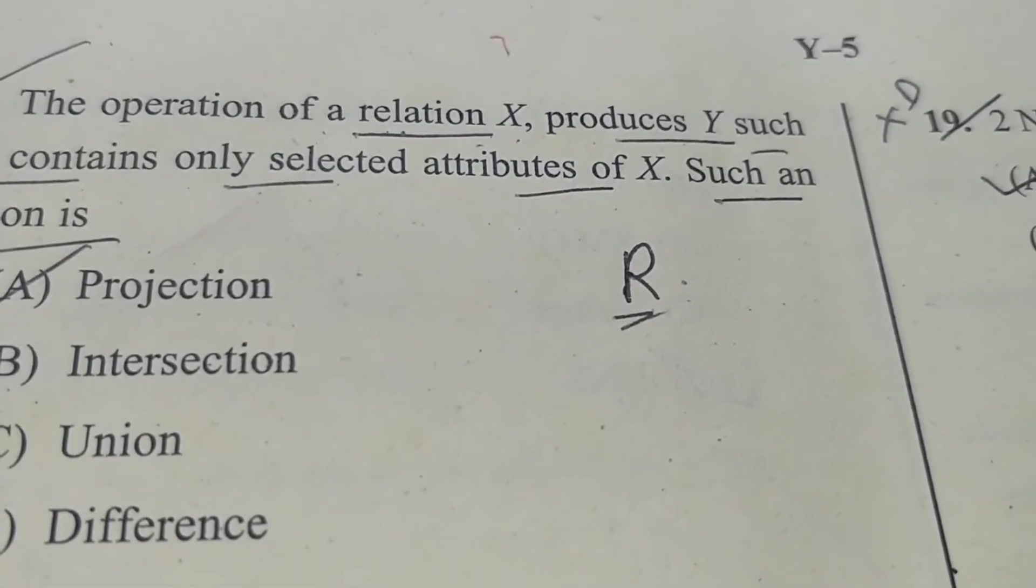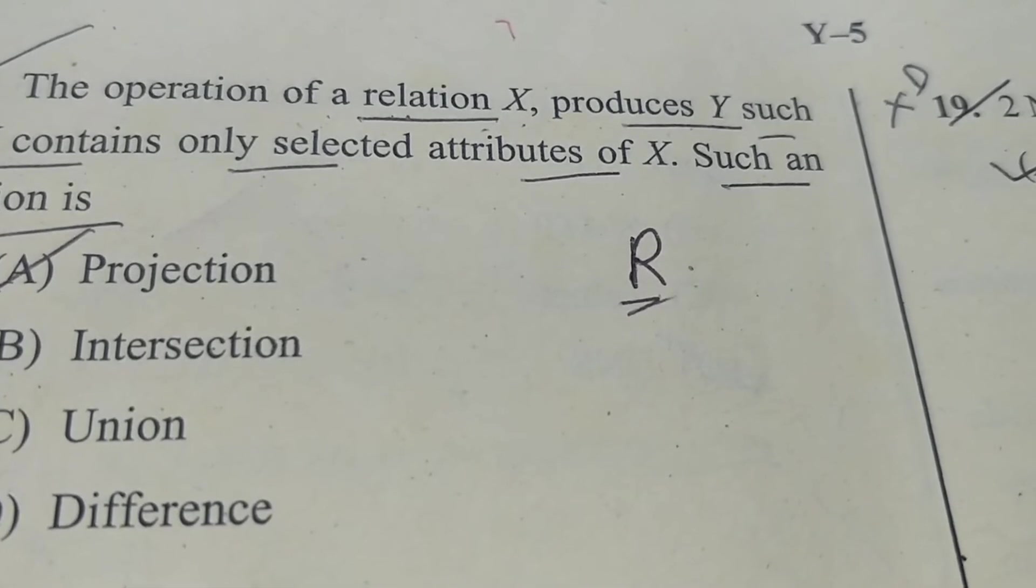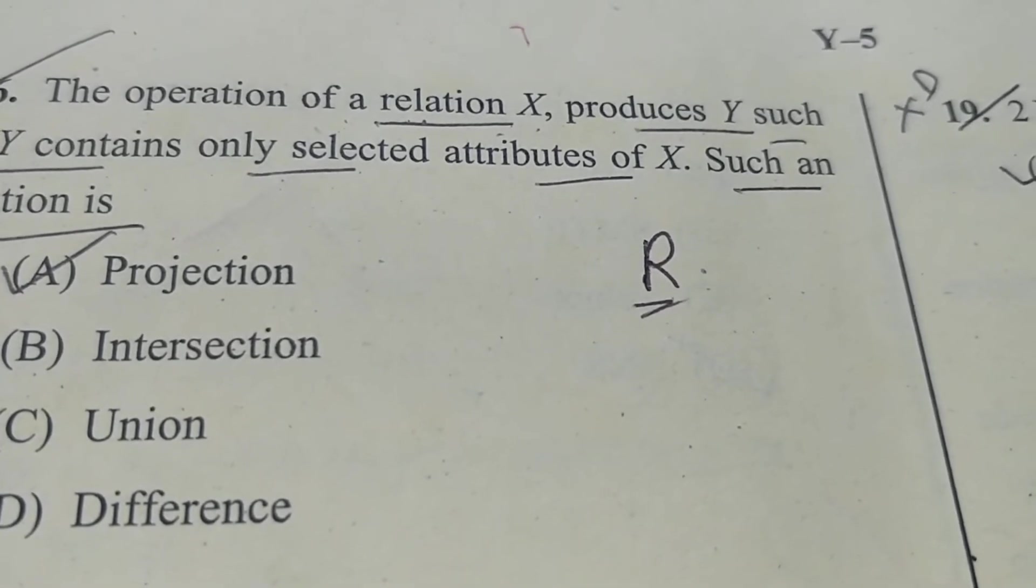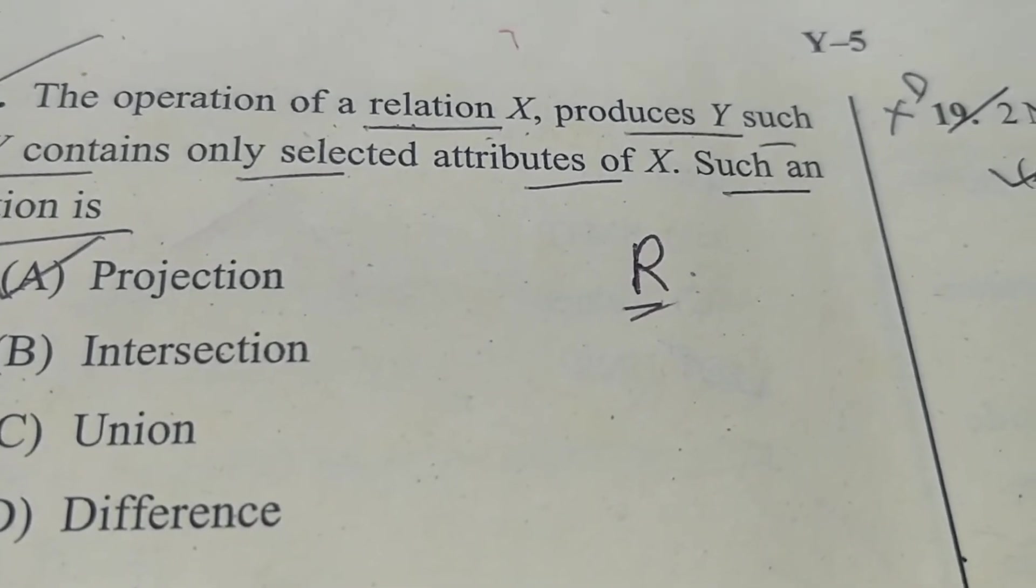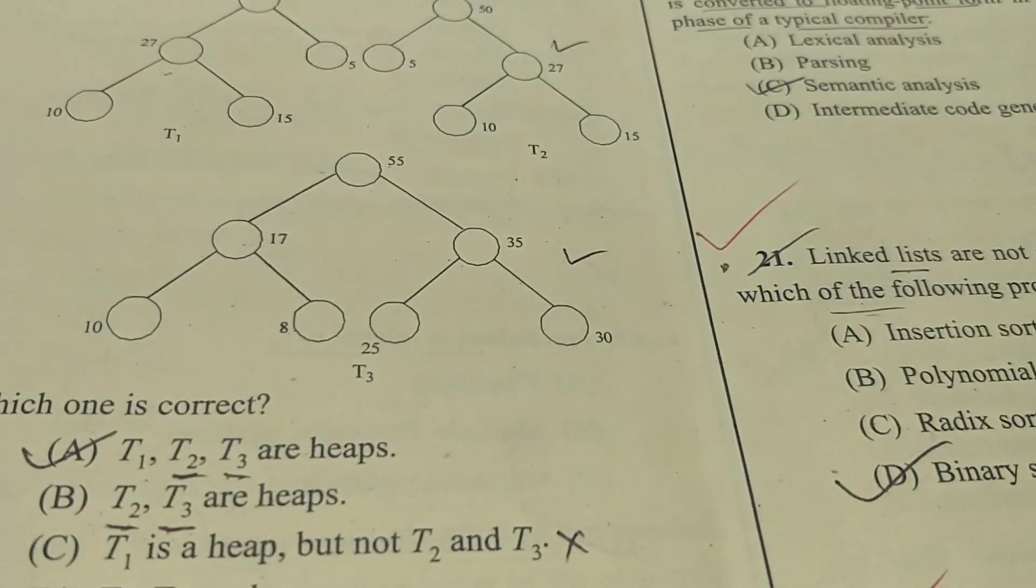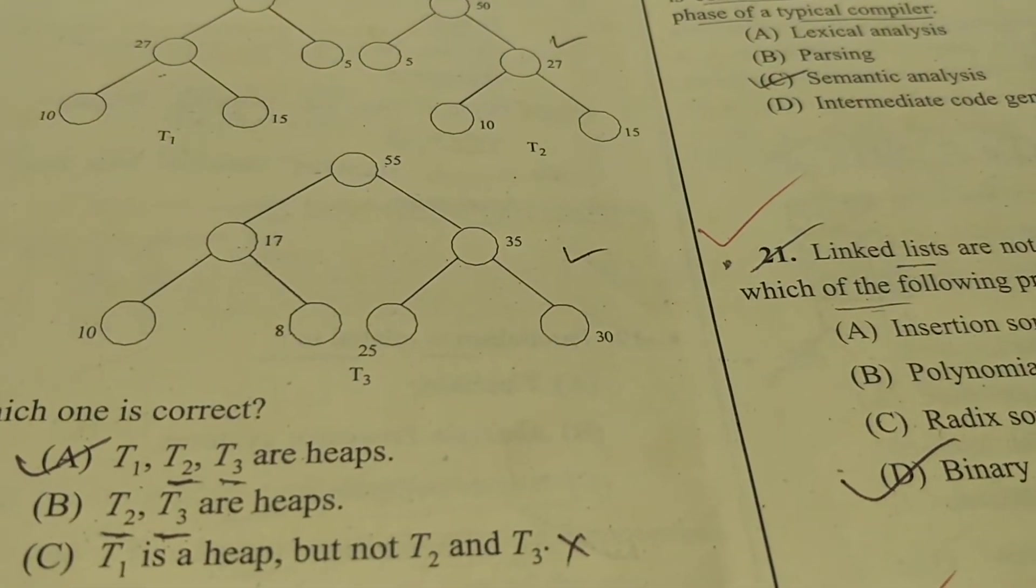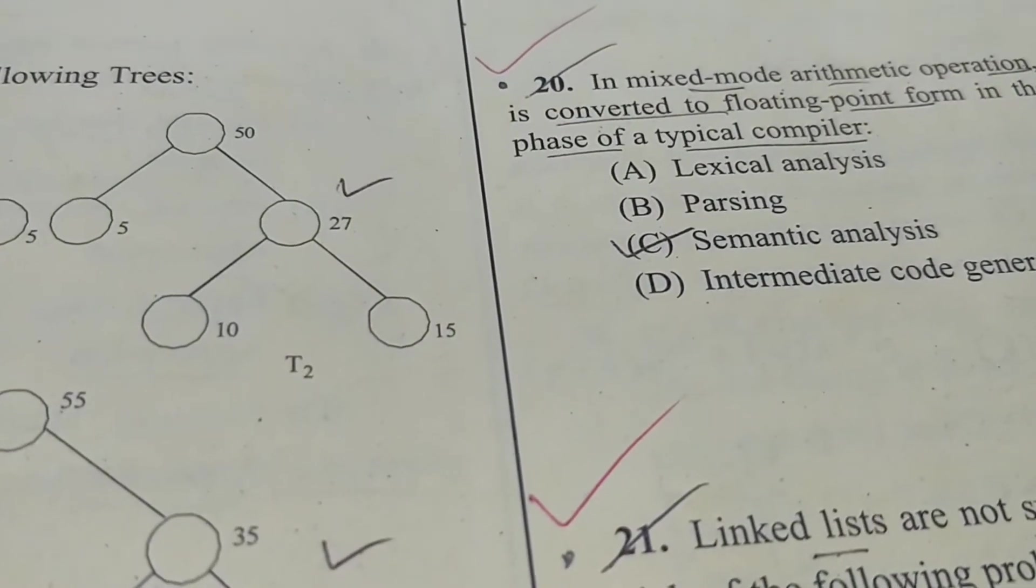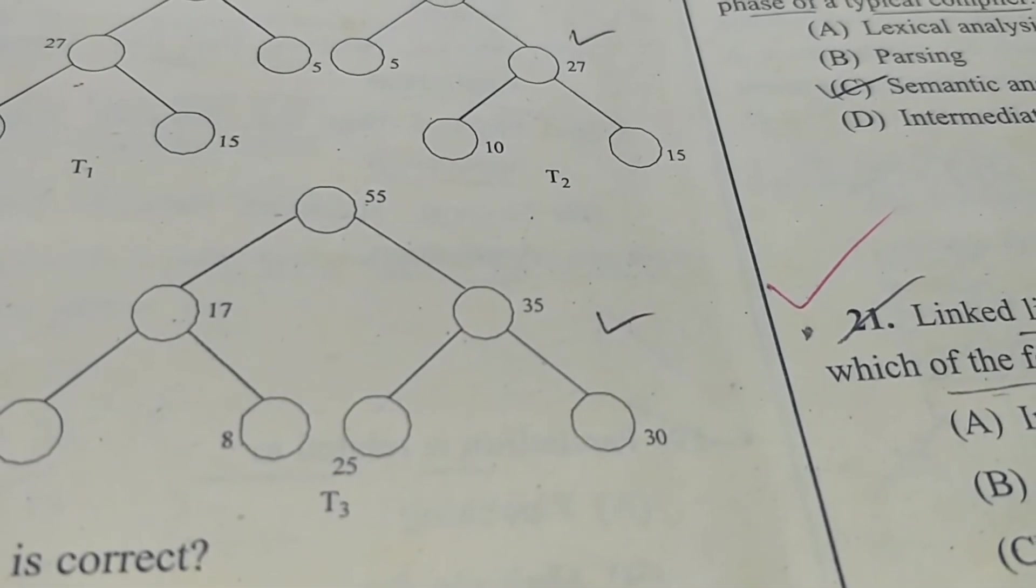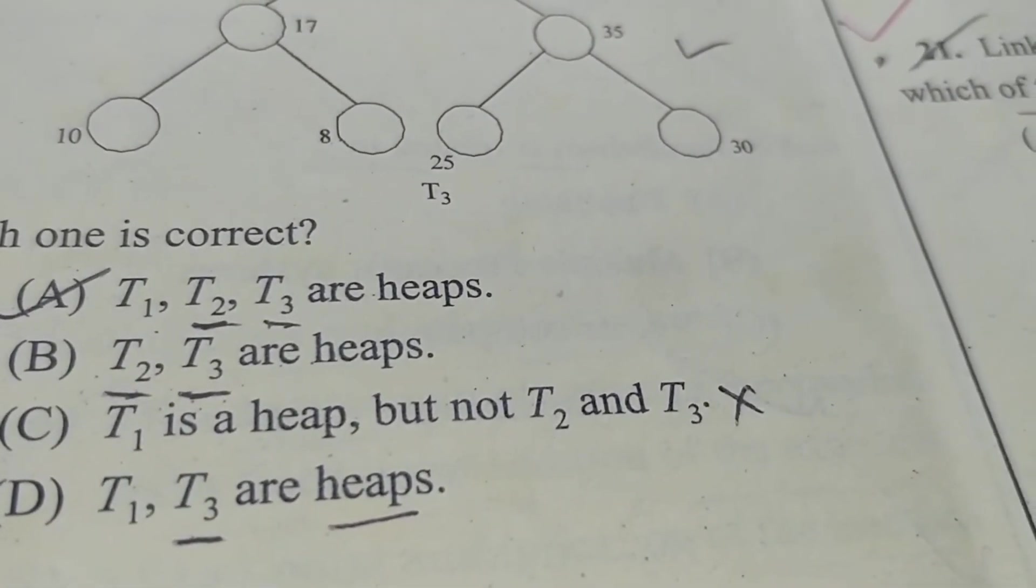Now question 16: the operation of a relation X produces Y such that Y contains only selected attributes of X. Such an operation is A: projection, B: intersection, C: union, D: difference. The correct answer is A: projection. Question number 17: consider the following tree. That is 50, 27, 5, 10, 15. So T1 is a max heap. 50, 5, 27, 10, 50 - it is a max heap. And T3: 55, 17, 35, 10, 8, 25, 30 - it is also a max heap. Which one is correct? T1, T2, T3 are heaps. So A is the correct answer.